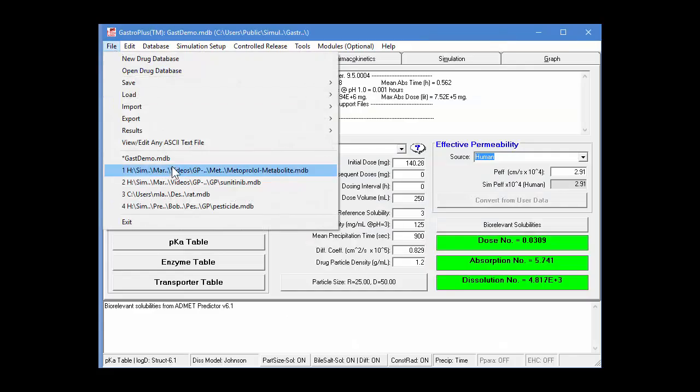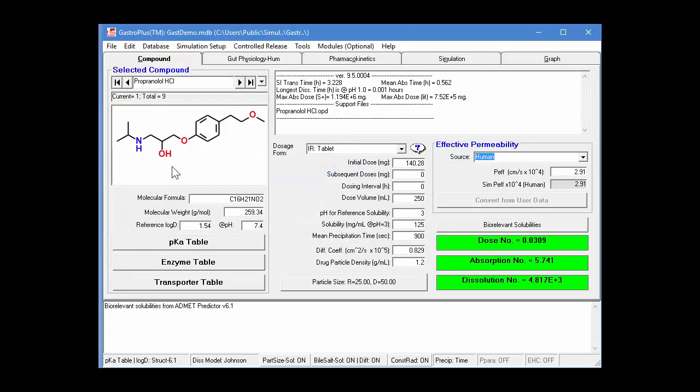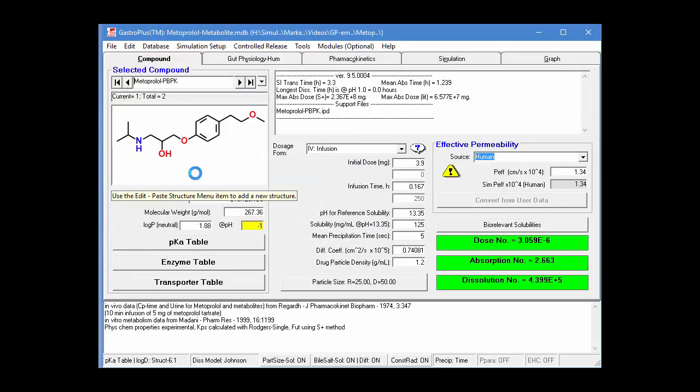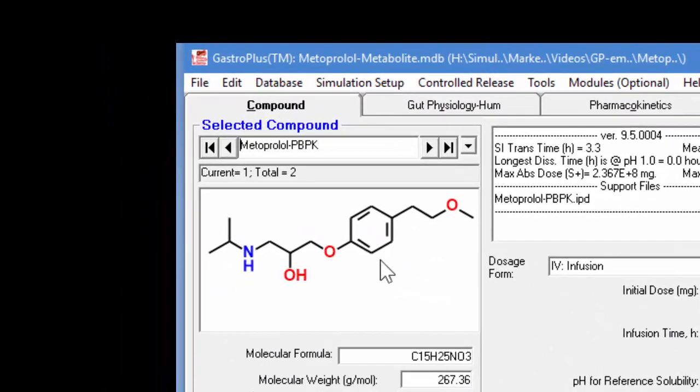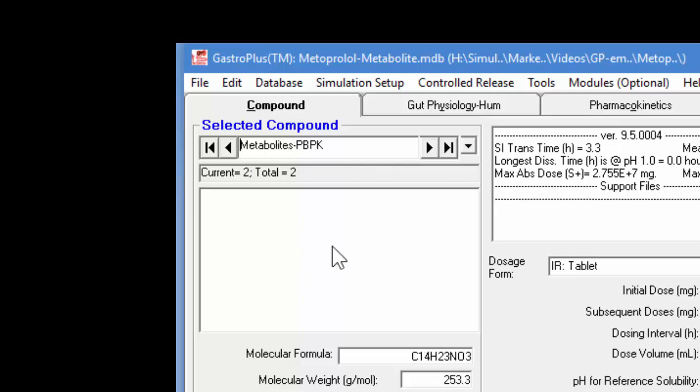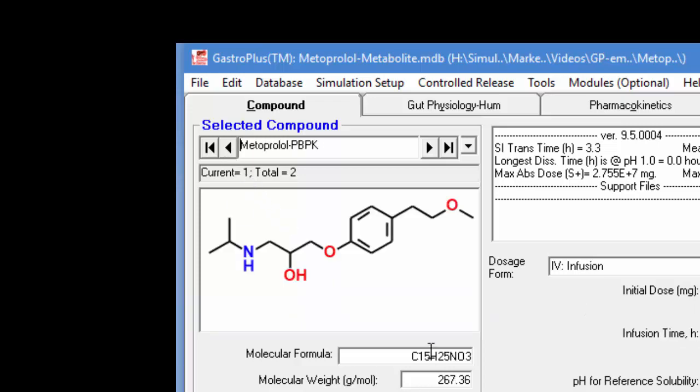Okay, the first thing I'll do is open the database I've created. This is in the tutorial tree. In this database, there are two records. The first one is for Metoprolol, and the second record is for the metabolites. There's no structure here because we're tracking all three metabolites.